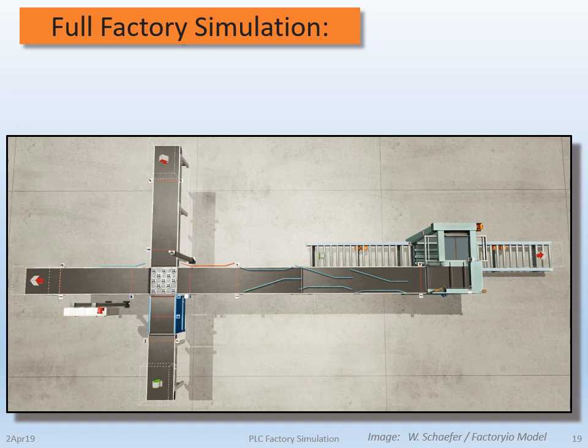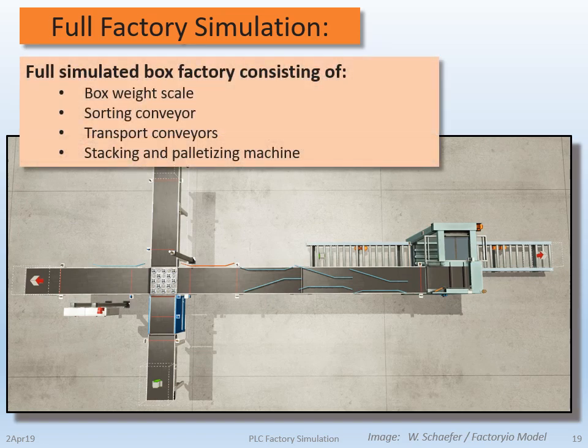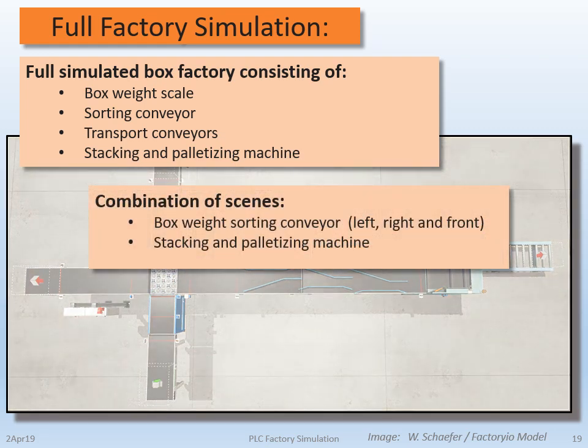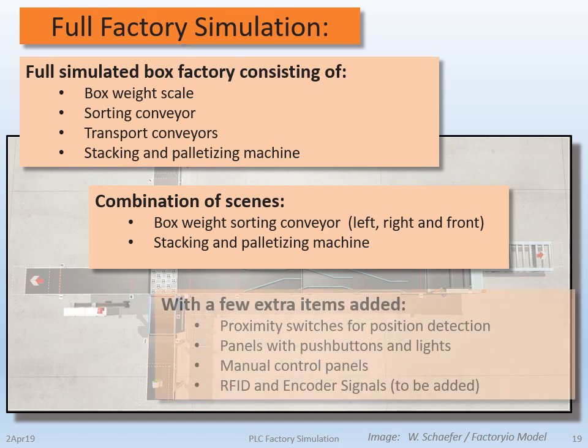Here I've built up a basic full factory simulation. This box factory consists of a box weight scale, a sorting conveyor, transport conveyors, and a stacking and palletizing machine. This is actually just a combination of several scenes within Factory I/O — the box weight sorting conveyor, which provides left and right sorting capability, and of course the stacking and palletizing machine itself.